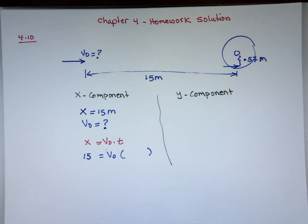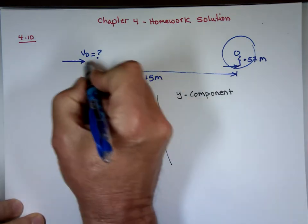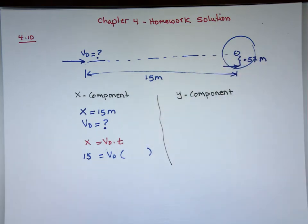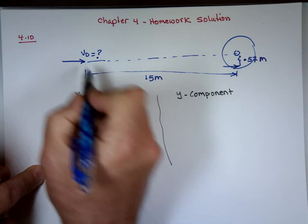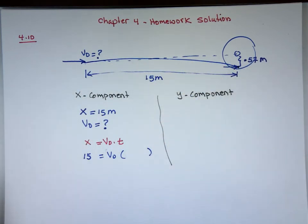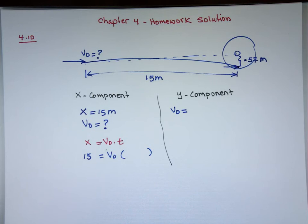Looking at the y-direction: what was the initial velocity in the y-direction? It's zero, because the arrow was fired horizontally. You can verify: v₀ times sine of zero equals zero. So there's no initial velocity in the y-direction — it wasn't fired up or down, it was straight out. Using the initial height as reference, the initial height y₀ is zero, and the final height y is negative 0.57 meters.